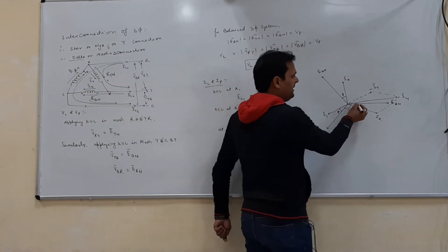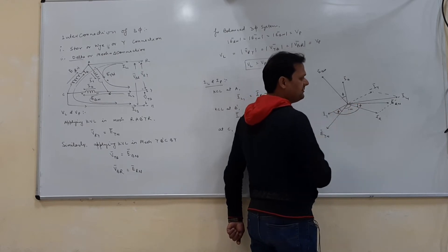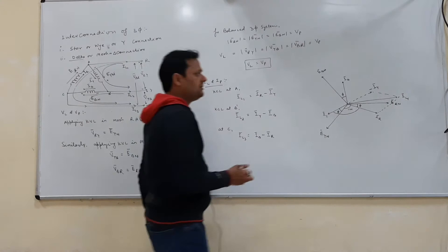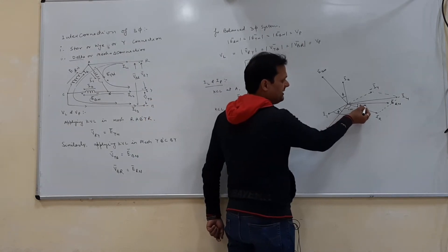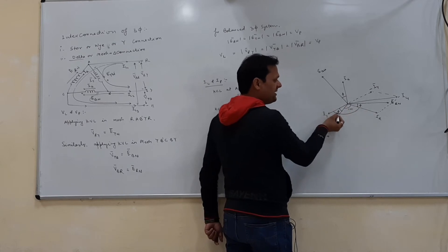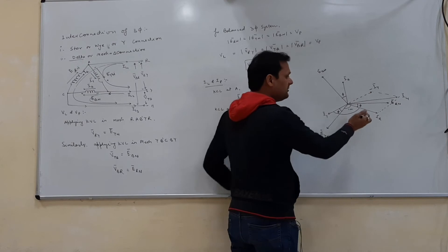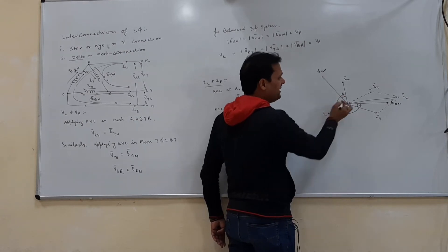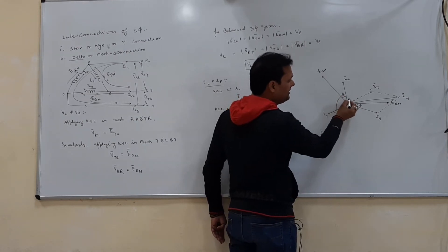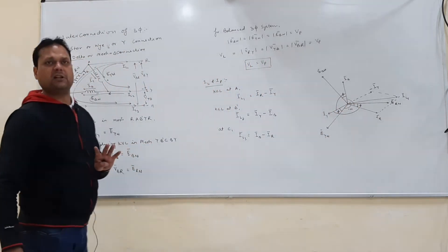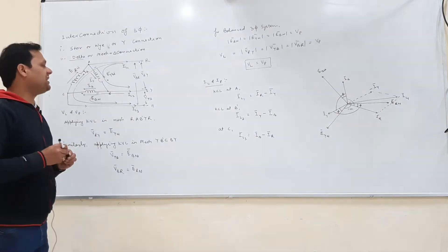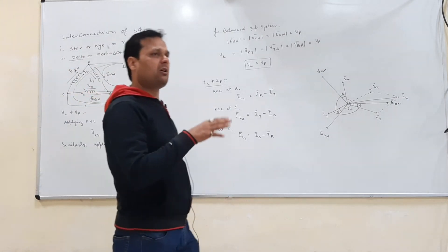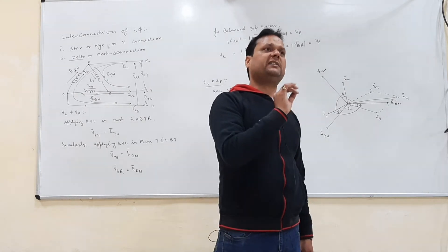An important observation: since both IR and IY lag their respective voltages by the same phi, and the voltages are 120 degrees apart, the angle between IR and IY is also 120 degrees. Therefore, the angle between IR and minus IY is 60 degrees. This means phase currents are 120 degrees apart for a balanced three-phase system.